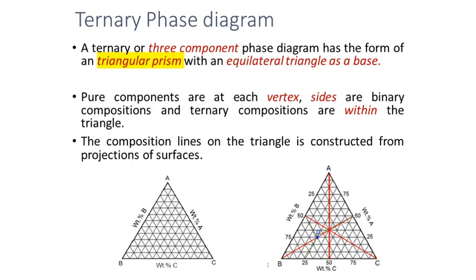If we have more than two components, we cannot practically draw the phase diagram on a 2D surface. As the number of components increases, the complexity of the phase diagram also increases. The three-component phase diagram is the ternary phase diagram; if we have four components, it is a quaternary phase diagram.